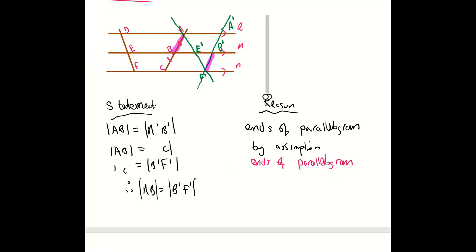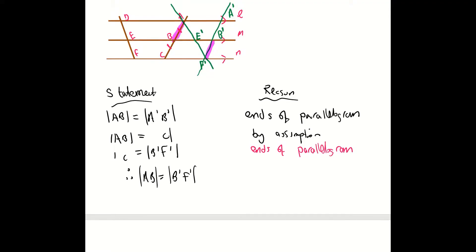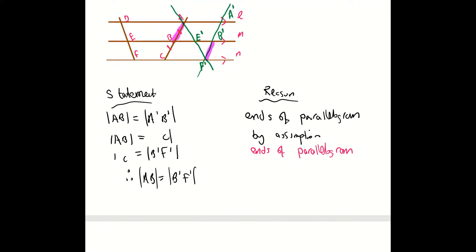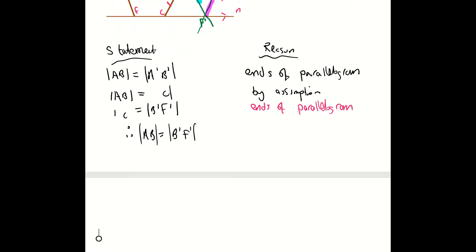The second item for our congruency is the vertically opposite angles. If you look at our picture, we have our vertically opposite angles at E dash. So that's written as: angle AE dash B is equal to angle F dash E dash B dash. The reasoning is vertically opposite angles.